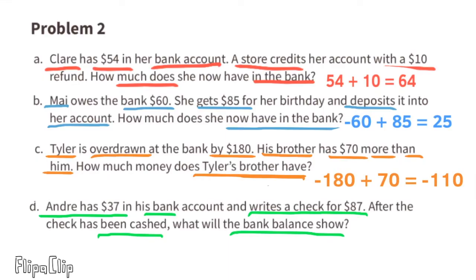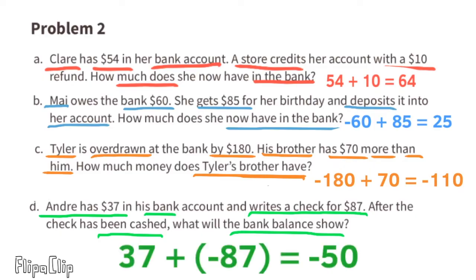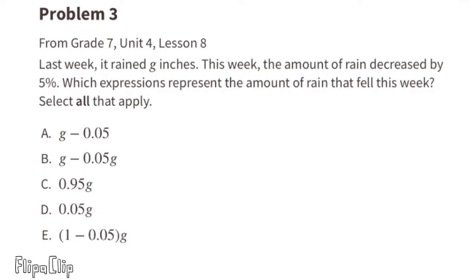Part d: Andre has $37 in his bank account and writes a check for $87. Andre should not be writing a check for more than his balance. We can represent his situation as 37 plus a negative 87, which equals negative $50. He would owe the bank $50, not to mention the overdraft fees that would put him further in debt.